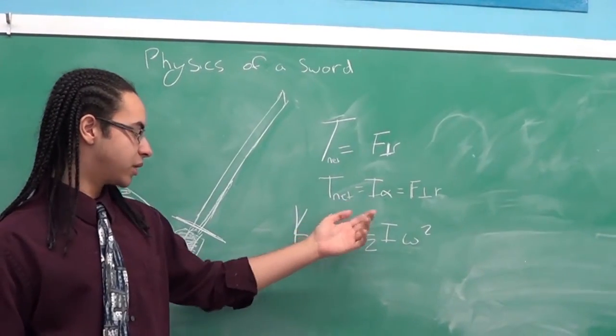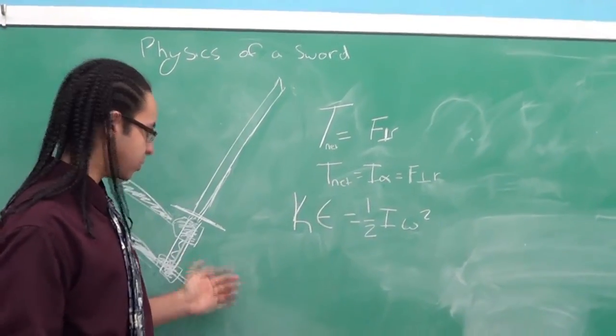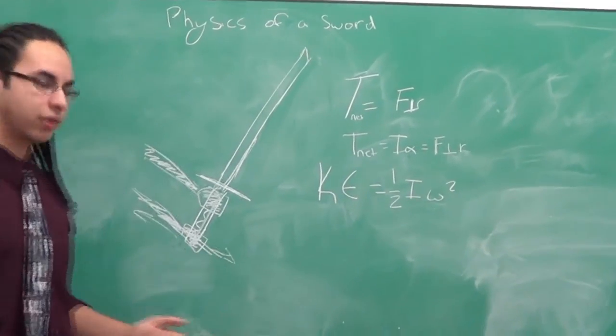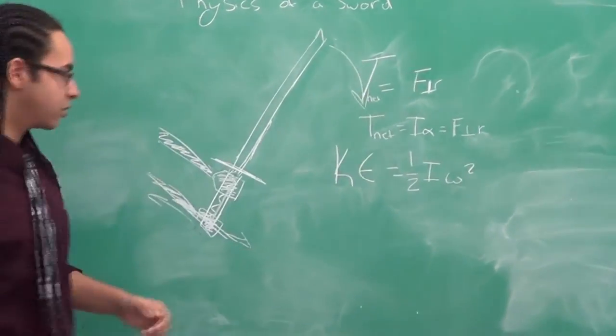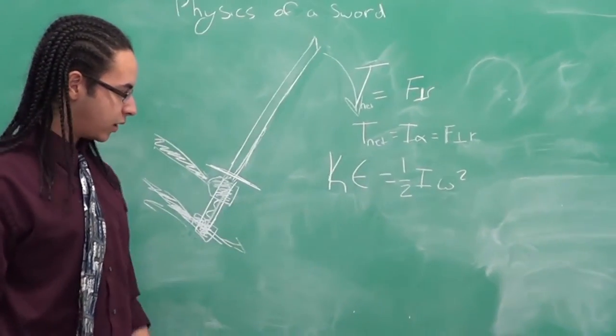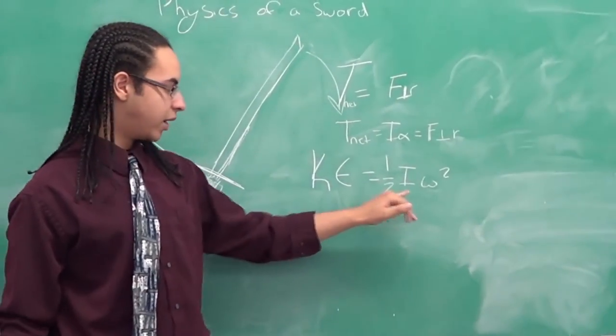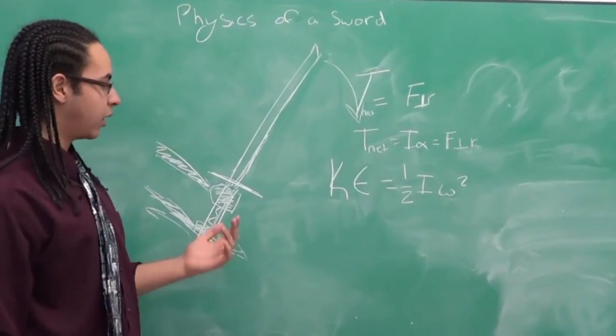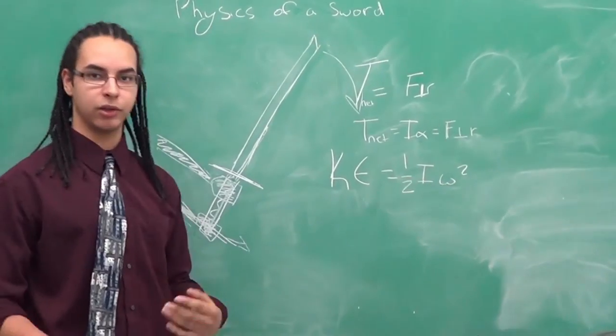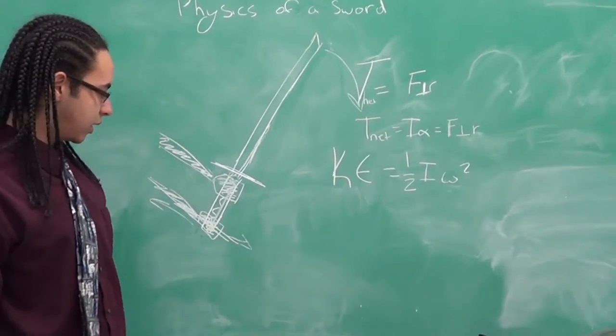Torque net equals I-alpha, so the inertia of the object will be accelerated when you apply torque to it, which will apply rotational motion to the sword, which will create a kinetic energy. So one half I omega squared is kinetic energy for rotational. You'll be accelerating the object to have an angular velocity, and that will create the kinetic energy.